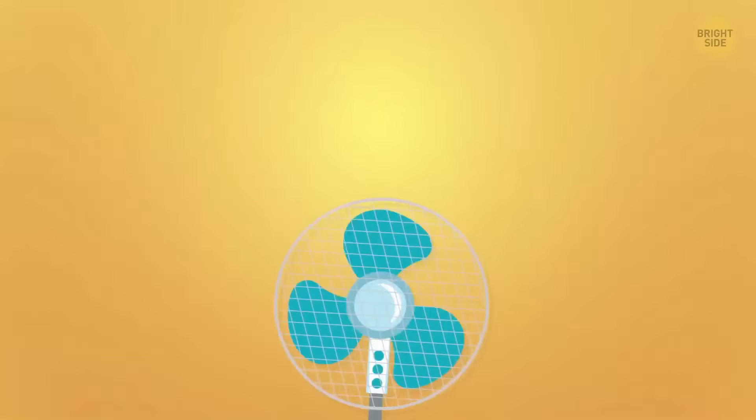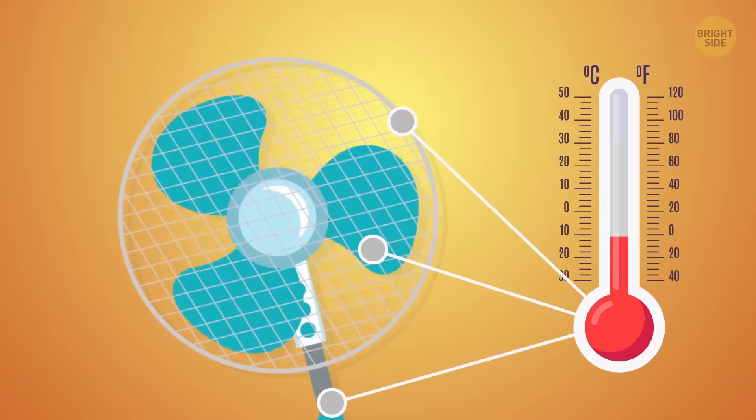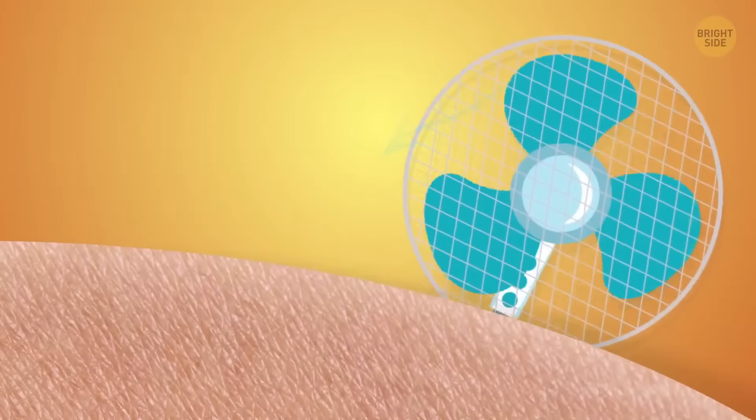Electric fans don't actually cool the air. If you put a thermometer anywhere close to the working parts, you'll see the temperature rise due to the electric current. What it does do is cool your skin. The device speeds up the evaporation process, making sweat on your skin colder.